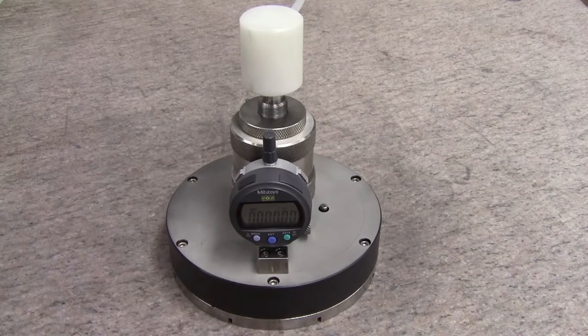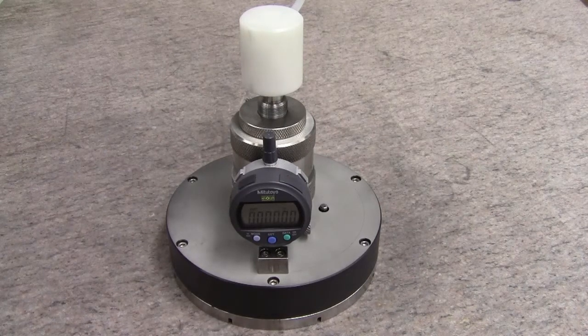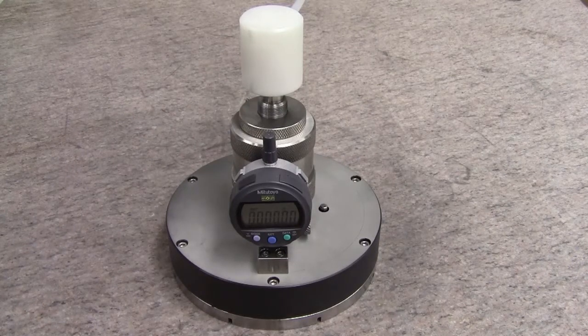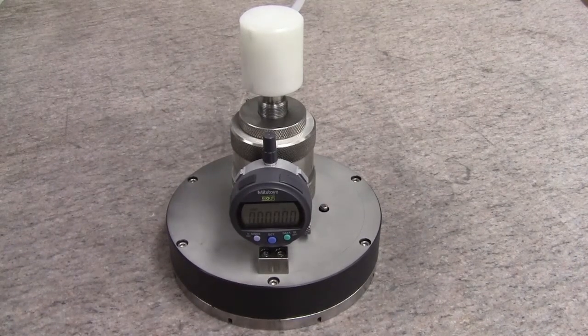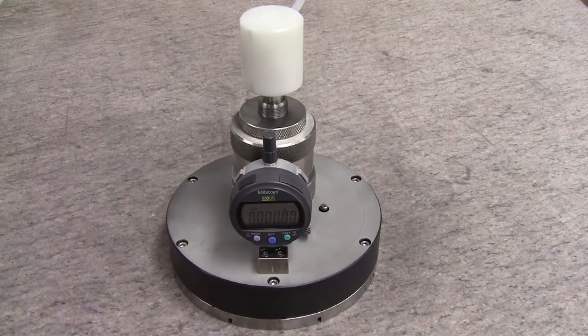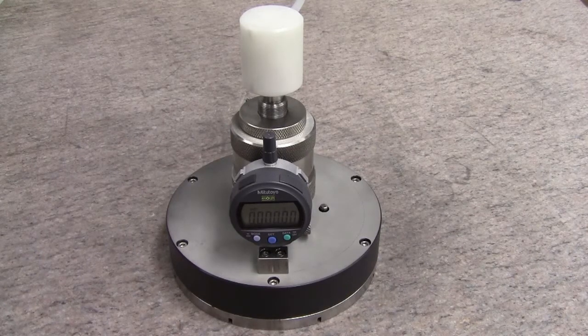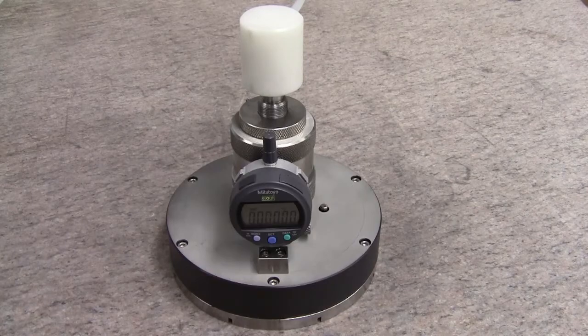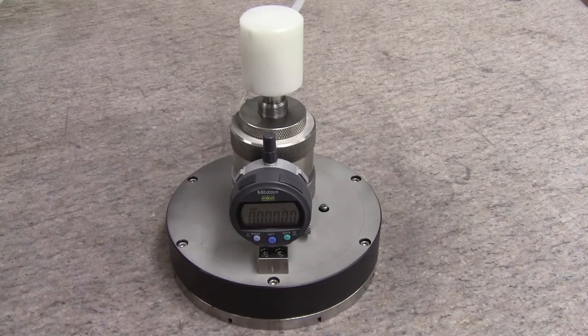The AccuPaw is available in sizes to fit Lapmaster machine models 12, 15, and 20. The model 12 AccuPaw can accommodate a three inch wafer, the model 15 can accommodate a four inch wafer, and the model 20 can accommodate a five inch wafer.